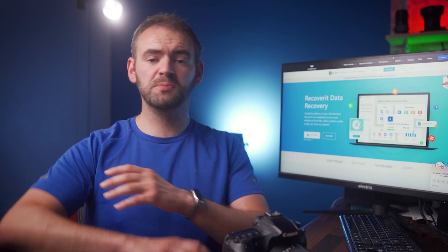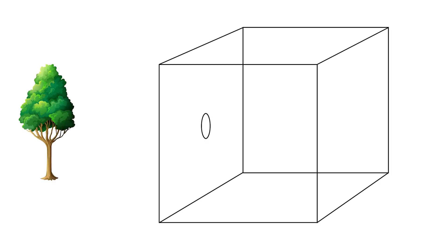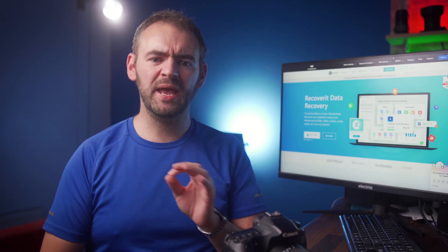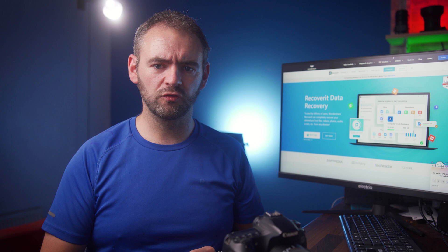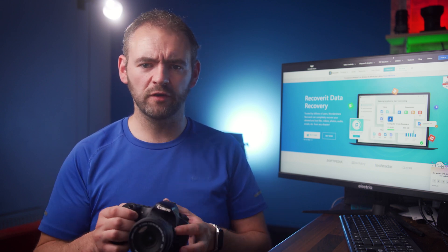Now the first cameras were as big as an entire room, and they had a tiny hole in one of the walls. When the light passed through that small hole, it would be reflected into an image upside down on the opposing wall. These were called pinhole cameras. In modern day cameras, however, things have changed somewhat.